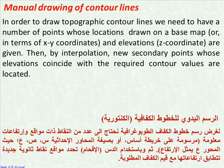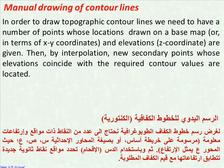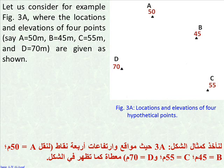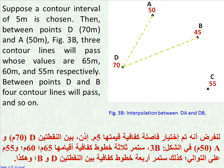Manual drawing of contour lines: in order to draw topographic contour lines, we need to have a number of points whose locations are drawn on a base map or in terms of x-y coordinates, and elevations that are given. Then, by interpolation, new secondary points whose elevations coincide with the required contour values are located. Let us consider, for example, figure 3a, where the locations and elevations of 4 points — say a equals 50 meters, b equals 45 meters, c equals 55 meters, and d equals 70 meters — are given as shown. Now, suppose a contour interval of 5 meters is chosen.